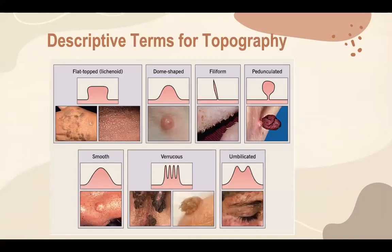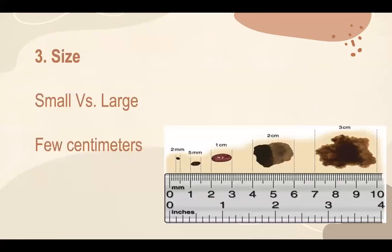We can also describe the top of a lesion if it has a distinctive appearance. For example, if the top of a lesion is flat and thickened, we call it lichenoid. Or it could be dome-shaped, filiform, pedunculated, smooth, verrucous, or umbilicated — such as the lesions of molluscum contagiosum. The size of a lesion is also very important. We can estimate it by saying it is a few millimeters or a few centimeters in diameter. However, if we want to be very accurate, we can use a ruler or measuring tape to measure the diameter precisely.